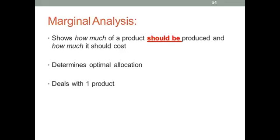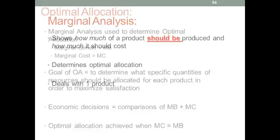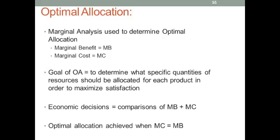Alright, let's review a little bit. Marginal analysis shows us how much of a product should be produced and how much it should cost in order to maximize satisfaction for both the consumer and the producer. It determines the optimal allocation and it deals with one product only. Optimal allocation is when your marginal benefit and marginal cost are equal. Economic decisions are essentially comparisons of marginal benefit and marginal cost.